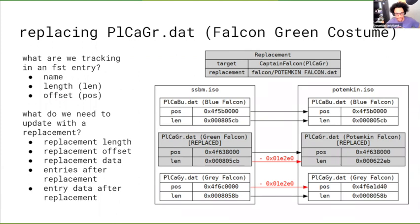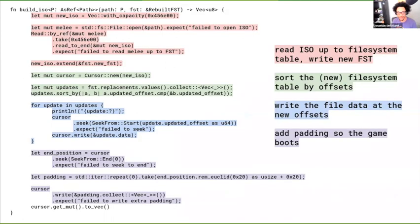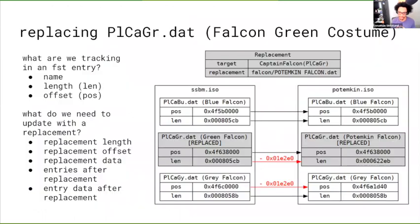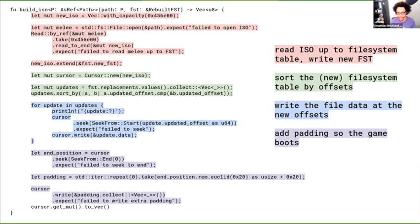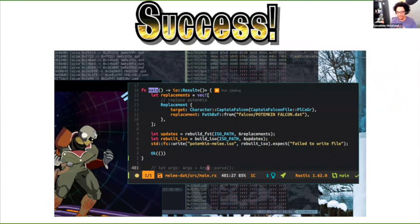I don't have time to show the implementation, but I have a graphic. On the left is the normal ISO and on the right is the modified ISO. This is when we're replacing Captain Falcon's green costume to turn him into Potemkin. One of the things we're tracking is in each entry there's the name, which is fine; there's the length, which could change; and there's the offset to the data. In this case the Captain Falcon file actually is smaller, so the offsets past Captain Falcon get pushed forward. To build the entire ISO — just take a vec of U8s and have something you can load and play — we read in the normal ISO, write the new file system table we generated, sort the new file system table by offsets, then use a cursor to seek to each piece where we've updated the offsets and write it. After adding some padding so the game boots, we can play a new version of Melee where Captain Falcon is entirely different, using Rust.